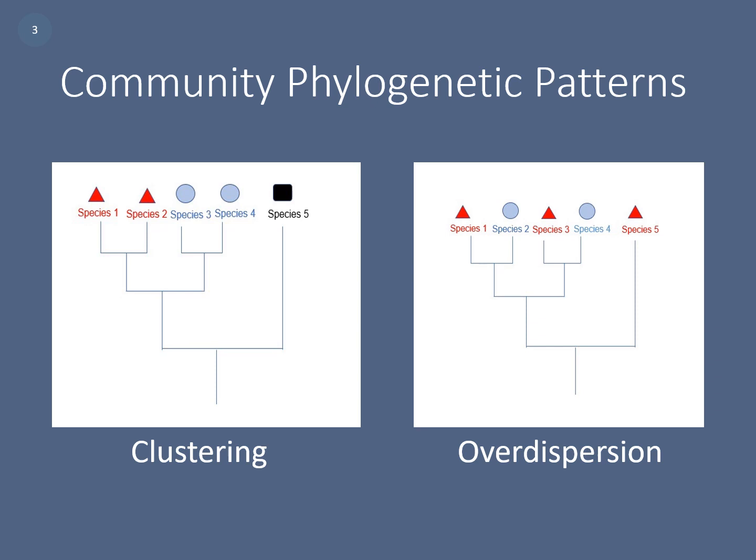The second pattern, shown on the right-hand side, is over-dispersion. This is where closely related species are found in different habitats, but distantly related species may share the same space. This is often caused by competitive exclusion — closely related species may compete for the same resource, resulting in one out-competing the other and one moving to a different habitat or niche. Distantly related species may not compete for the same resource and can therefore share the habitat.